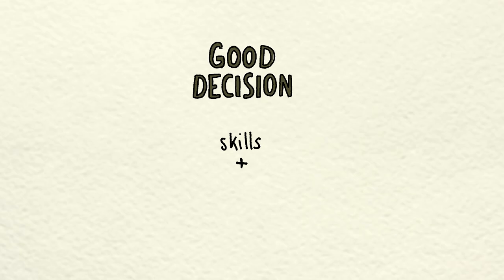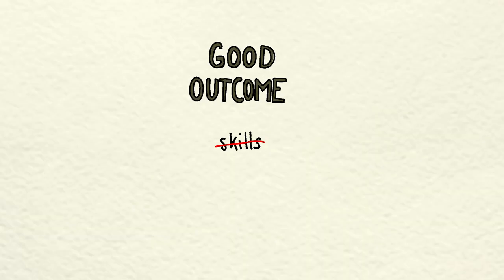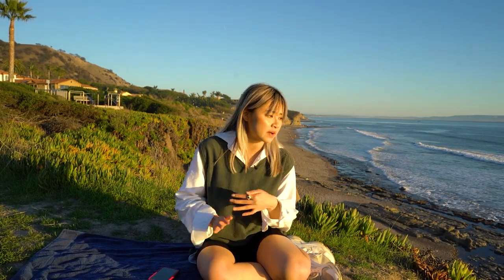There's a book by Seth Godin called Shipping Creative Work that I recommend. Seth Godin says there's a difference between a good decision and a good outcome. A good decision is skill plus the odds of the outcome working; a good outcome is regardless of skill — it's just the odds of something working. You have no control over the outcome. A lot of TikTok is algorithmic, it's luck, it's timing. Focus on making good decisions — what you can't control is the good outcomes. Don't take it personally.